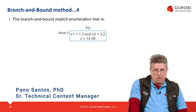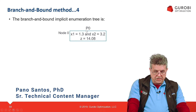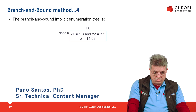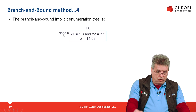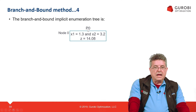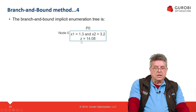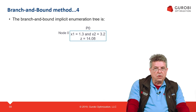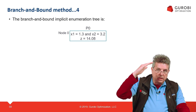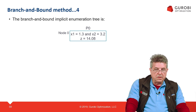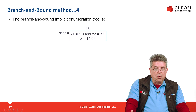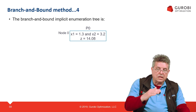The first step of the branch and bound approach is to solve P0, which is the LP relaxation of the MIP formulation we have. In this decision tree, the root node — node 0 — contains the P0 problem. The optimal solution of this problem was x1 equal to 1.3 and x2 equal to 3.2, with an optimal objective function value of 14.8. Since this is a relaxation of the original MIP problem, this value is an upper bound to any feasible integral solution — meaning the MIP objective will be 14.8 or less.